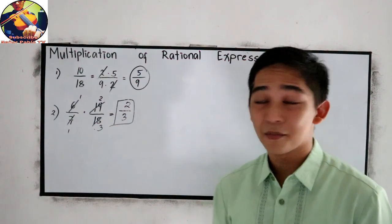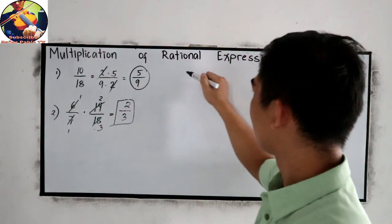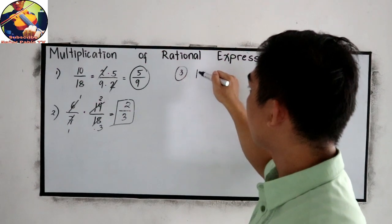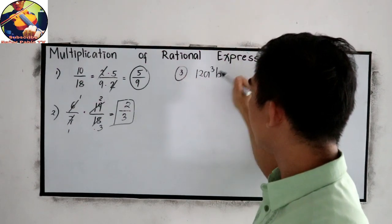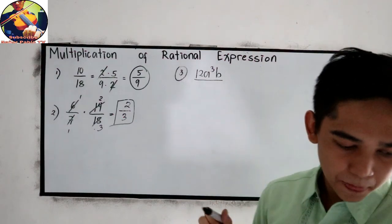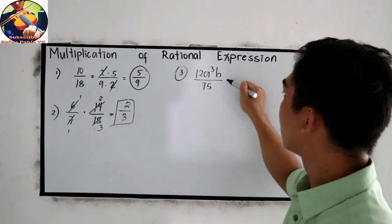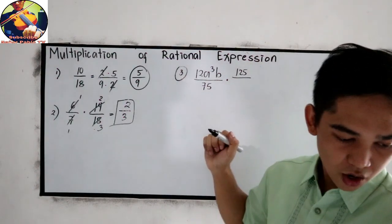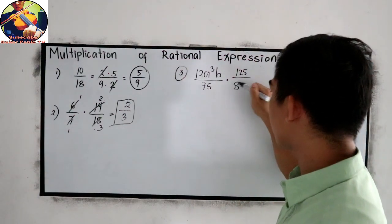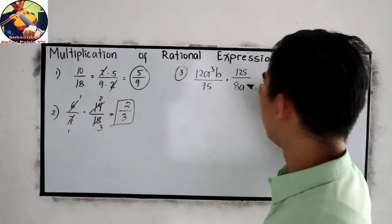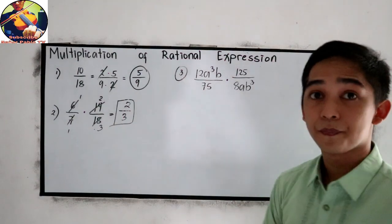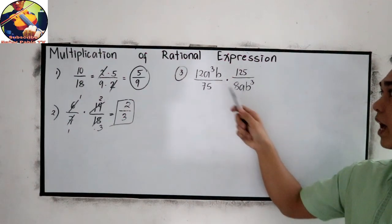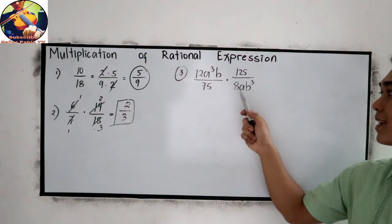Let's have example number 3. Let's say 12a cubed b all over 75 times 125 over 8ab cube.